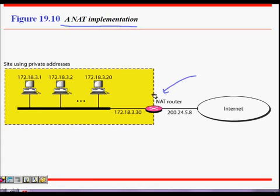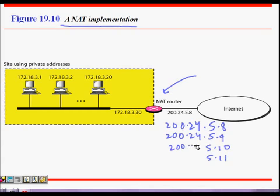Initially we have four IP addresses from an ISP: 200.24.5.8, 5.9, 5.10, and 5.11. We thought that would be sufficient for four people, and we assigned one IP address to each of our machines.